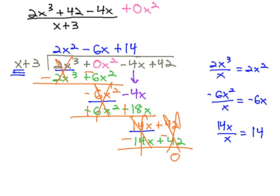In this problem, there is no remainder. We simply have 2x squared, minus 6x, plus 14, for our final solution.